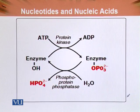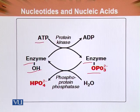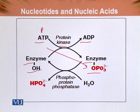This diagram shows the phosphorylation and dephosphorylation of an enzyme. There is a dephosphorylated enzyme form and a phosphorylated enzyme form. ATP is converted to ADP by the enzyme protein kinase, which transfers a phosphate group to the enzyme, converting it to its phosphorylated form.